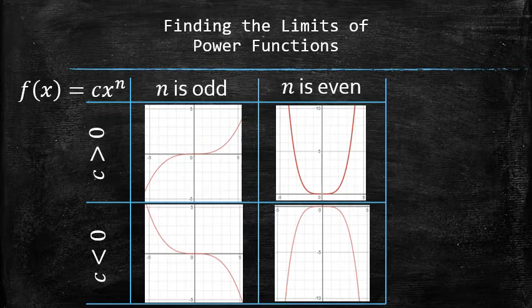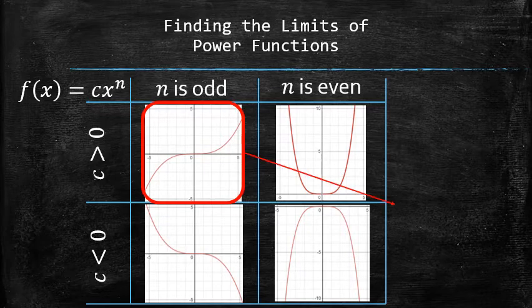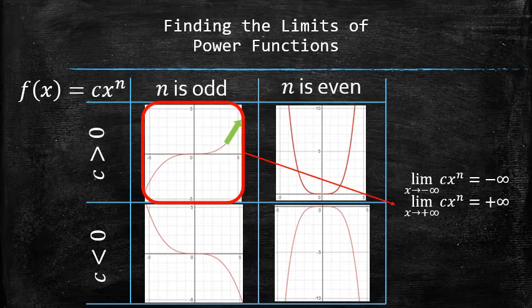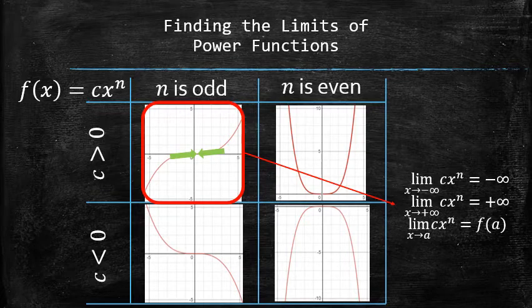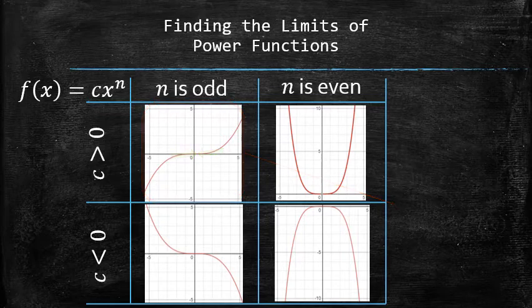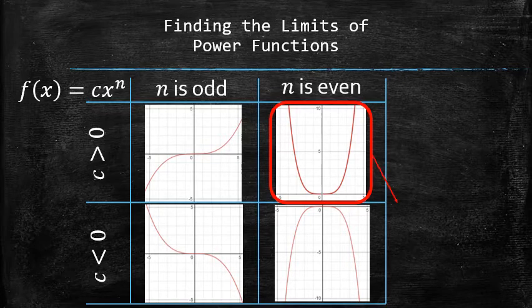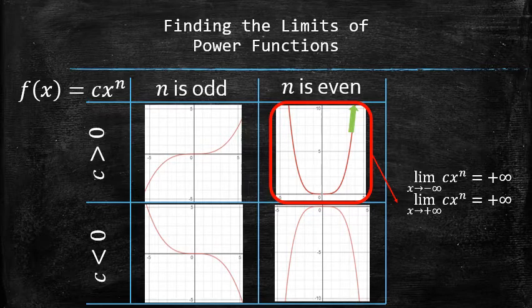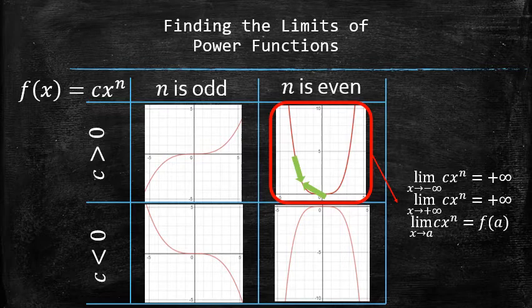What does that mean to us in terms of finding the limits of power functions? The behavior of a power function with a positive coefficient and odd degree, and similarly for a positive coefficient and even degree, can be described with the following limits: f approaches positive infinity as x approaches positive infinity, and f approaches positive infinity as x approaches negative infinity. For any point in between, f approaches its output at that point because power functions are continuous.